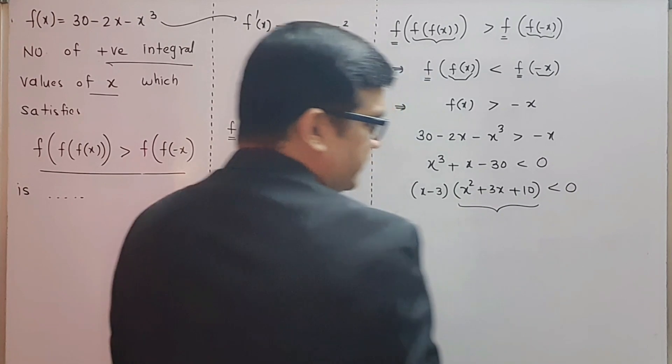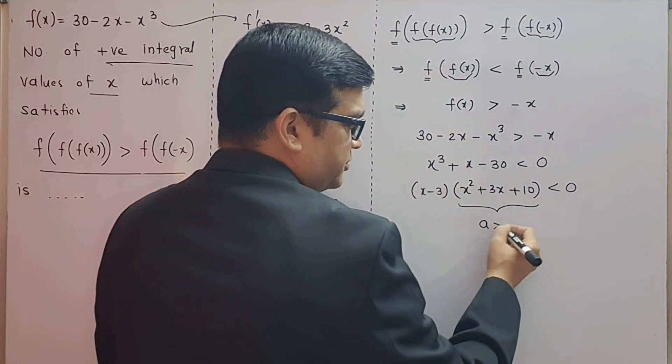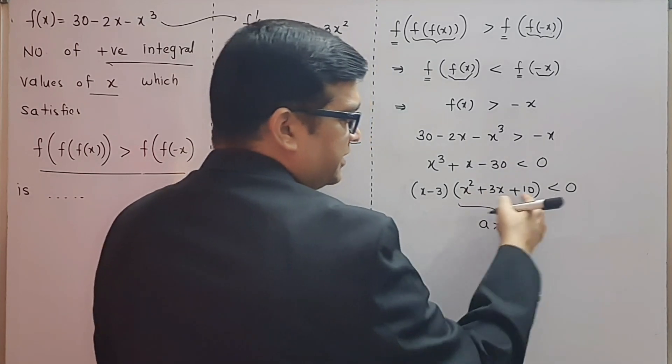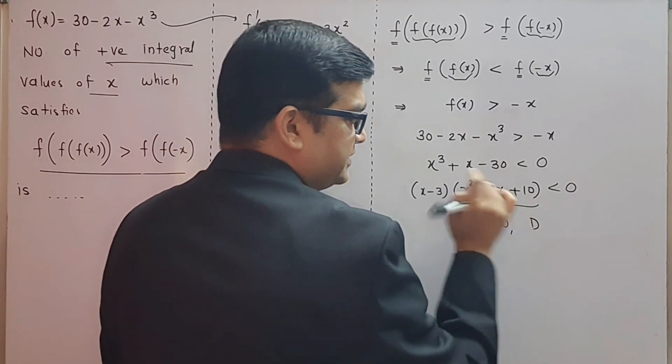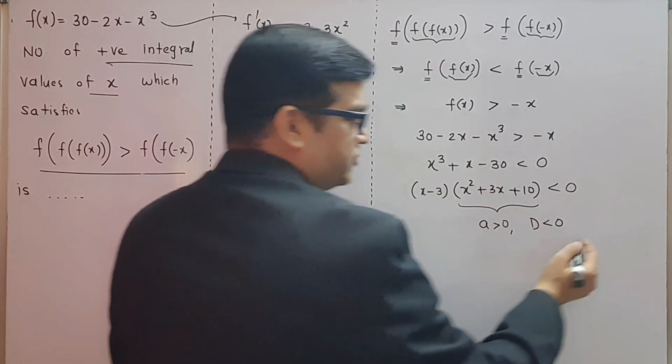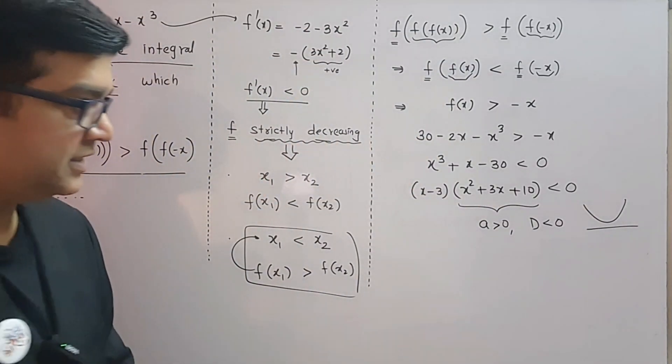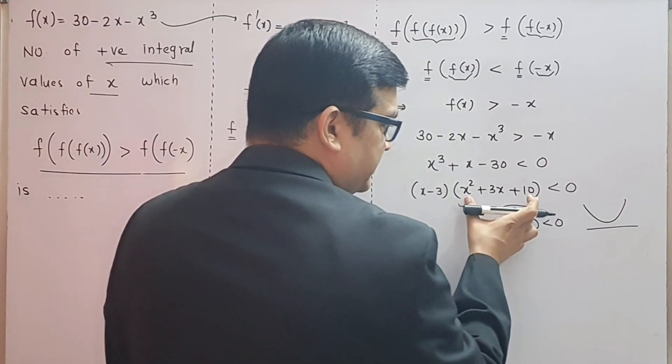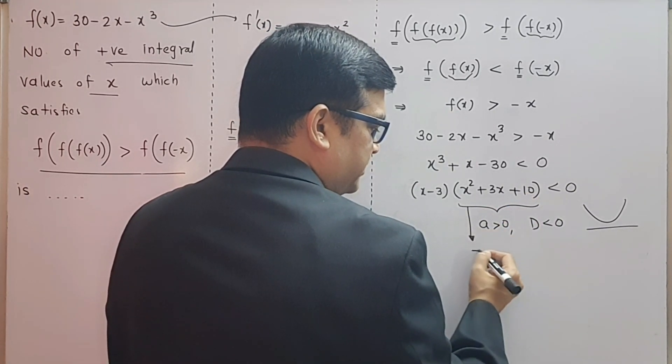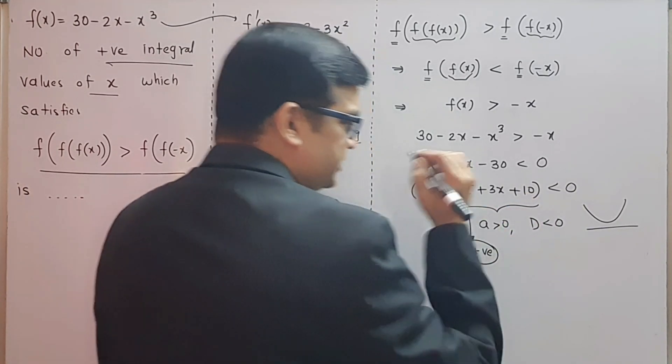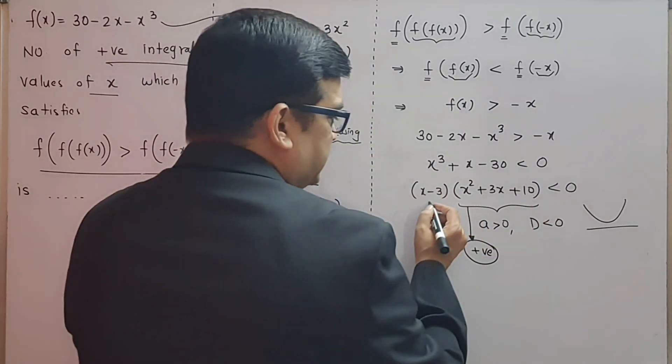I want you to observe this quadratic. The leading coefficient of this quadratic is positive, and the discriminant, if you find the discriminant value b² - 4ac, is negative. So the graph of this quadratic will be a smiling parabola above the x-axis. That means this entire quadratic expression